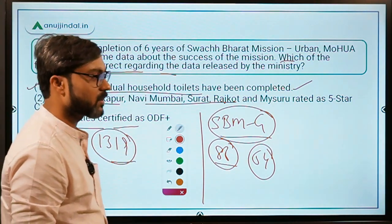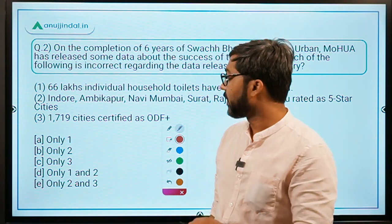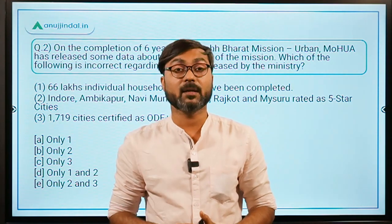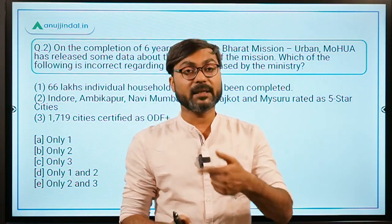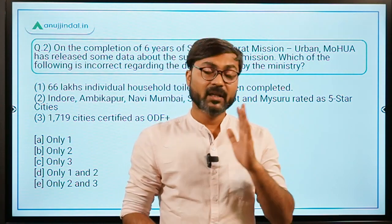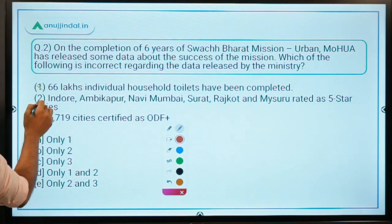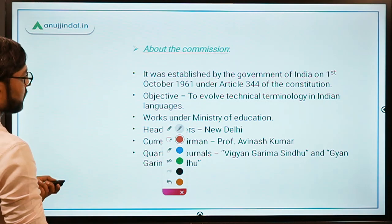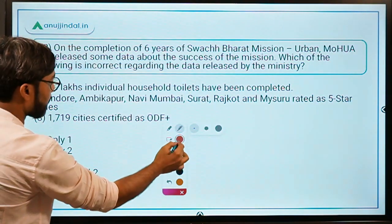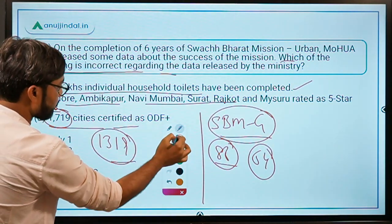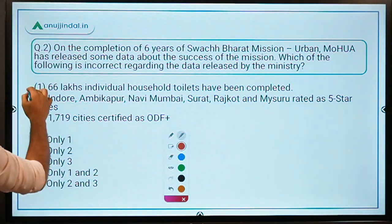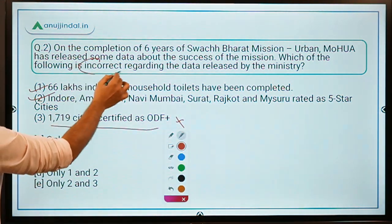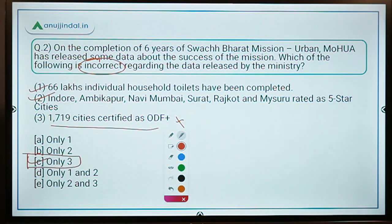This question is quite difficult because it is a data-based question, but nowadays you can expect any type of question in exams. The first and second statements are absolutely correct while the third is incorrect. So we need to find the incorrect statement, making Option C — 'Only three' — the correct answer.